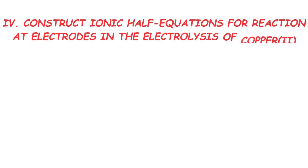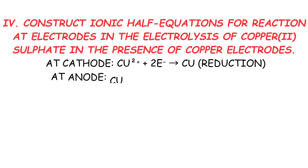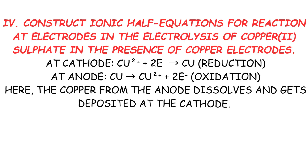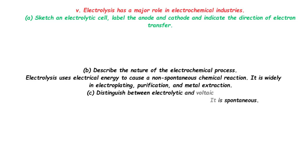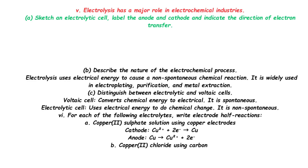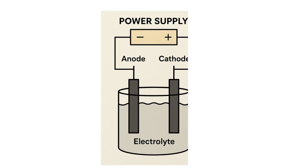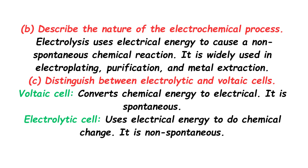Long Question 4: Construct ionic half-equations for the electrolysis of copper(II) sulfate solution using copper electrodes. The copper from the anode dissolves and gets deposited at the cathode. Long Question 5: Electrolysis has a major role in electrochemical industries. Sketch an electrolytic cell, label the anode and cathode, and indicate the direction of electron transfer. Electrons flow from the external source to the cathode. Electrolysis uses electrical energy to cause a non-spontaneous chemical reaction, and is widely used in electroplating, purification, and metal extraction.